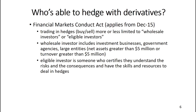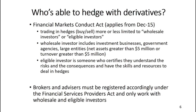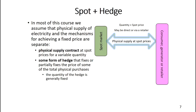Legislation in New Zealand — the Financial Markets Conduct Act, which applied from December 15 — limits who can buy or sell hedges. Trading in hedges is limited to wholesale investors or eligible investors. A wholesale investor is large: investment businesses, government agencies, or generally large entities with net assets greater than five million or turnover greater than five million per annum. An eligible investor is someone who certifies they understand the risks and consequences and have the skills and resources to deal in hedges. Brokers and advisors such as Energy Link must be registered under the Financial Services Providers Act and only work with wholesale and eligible investors.